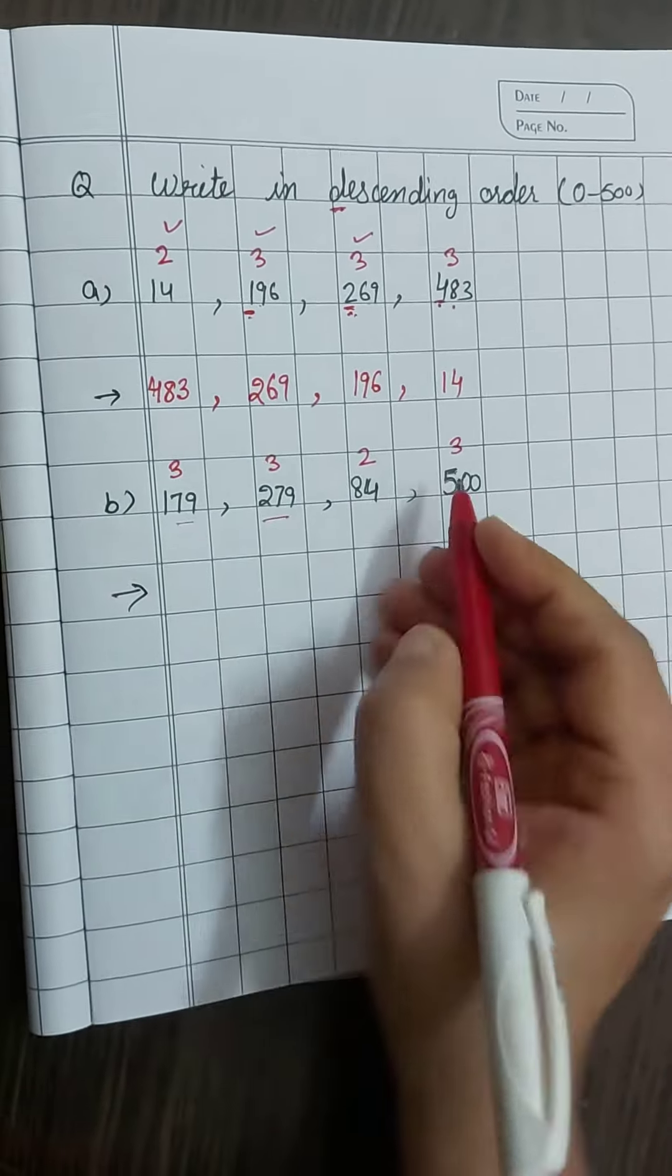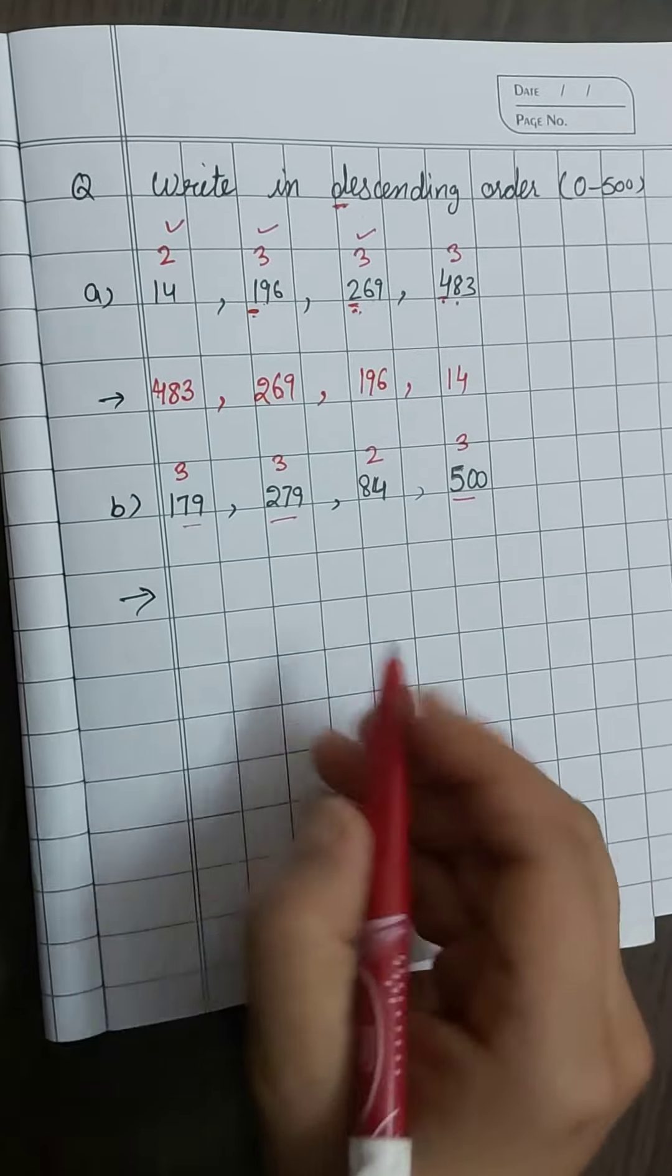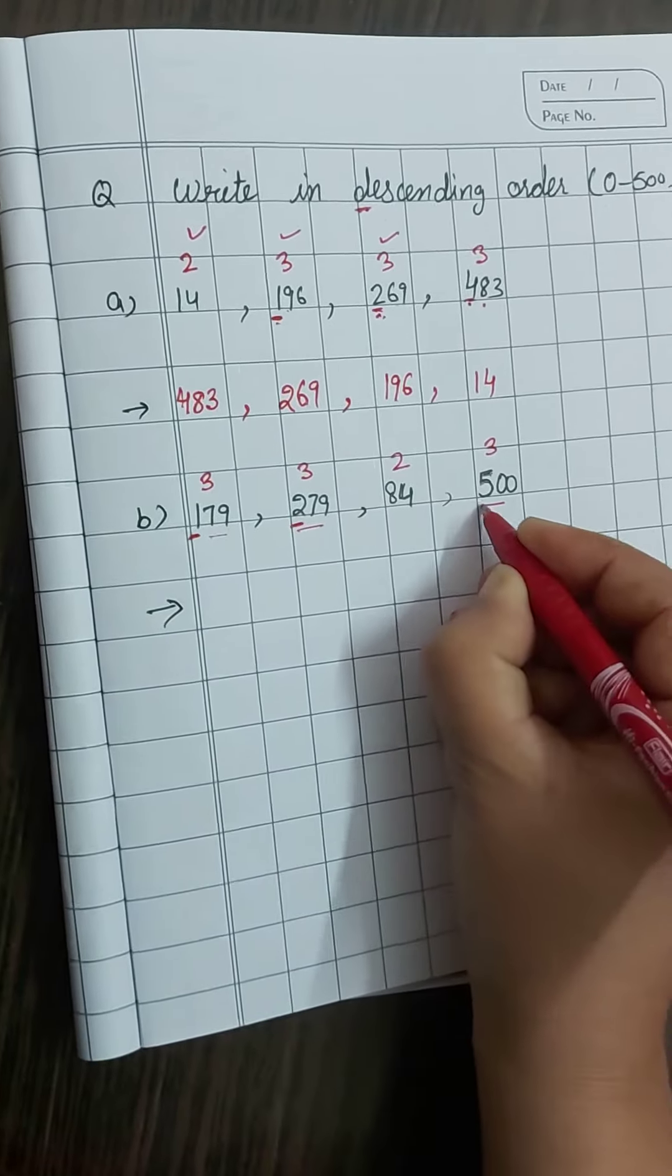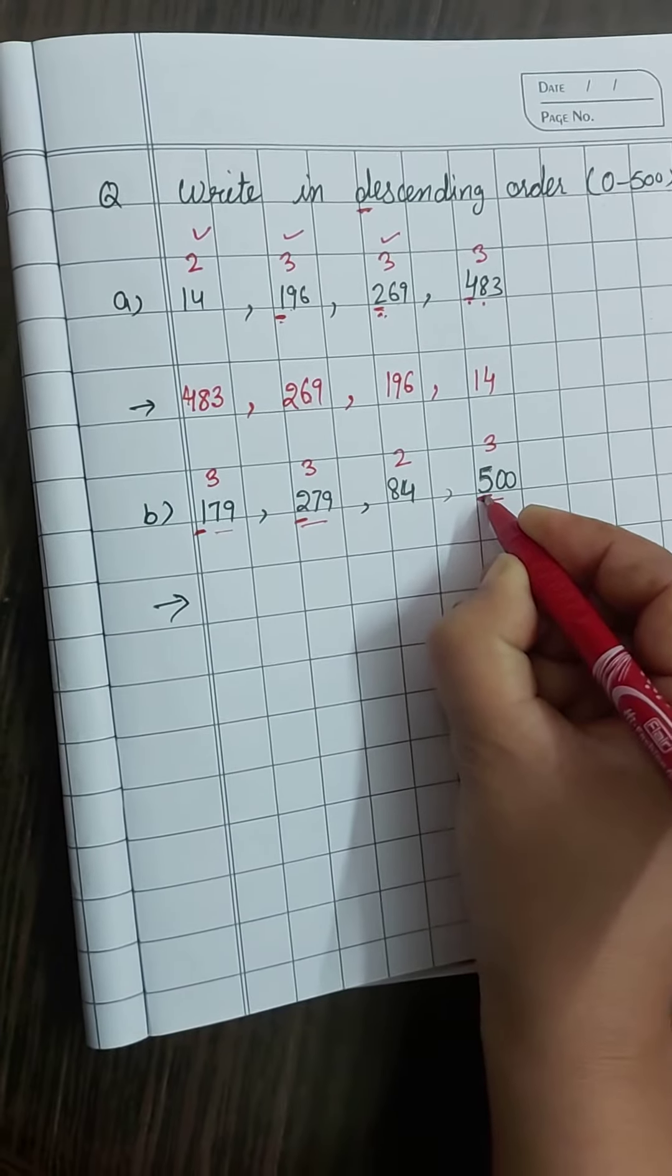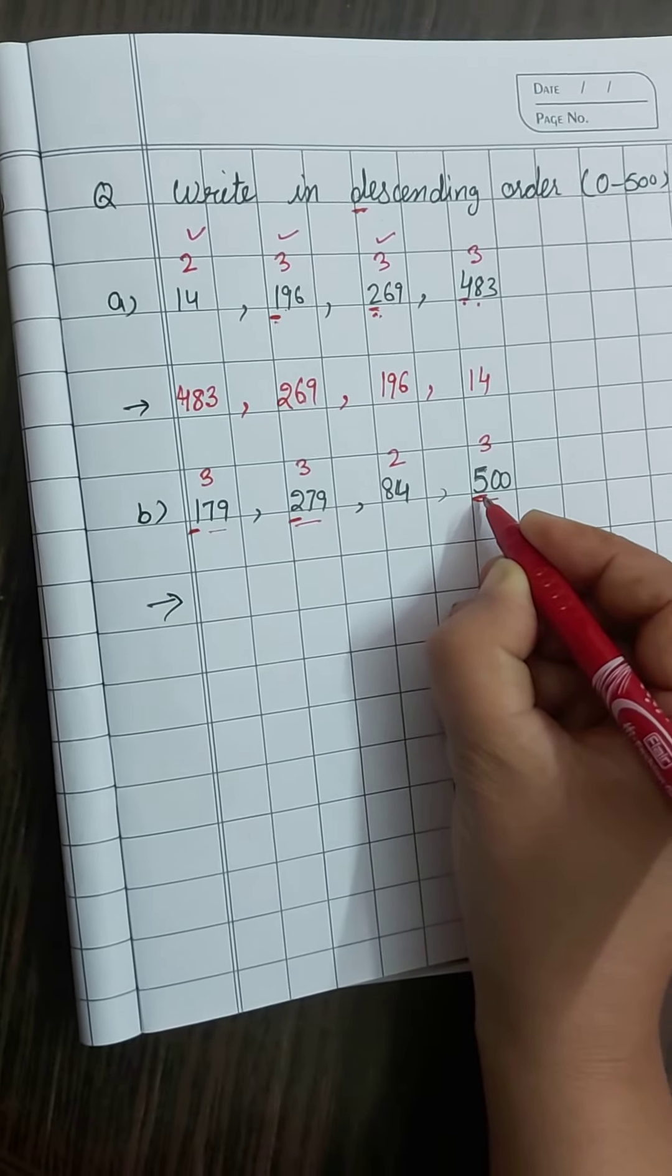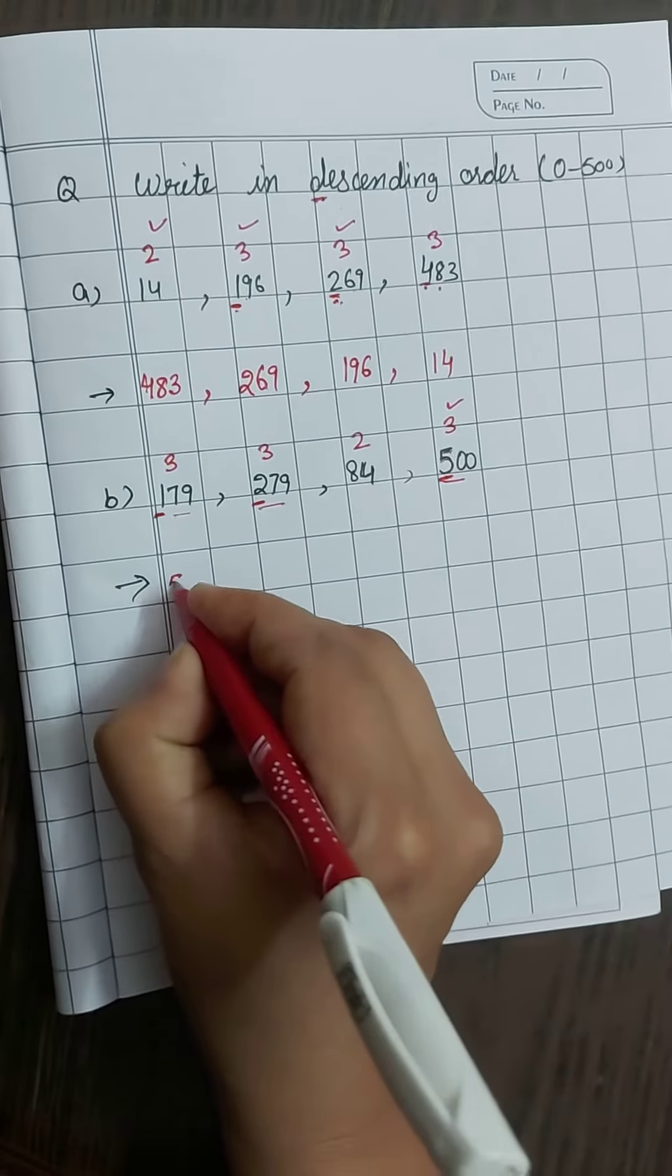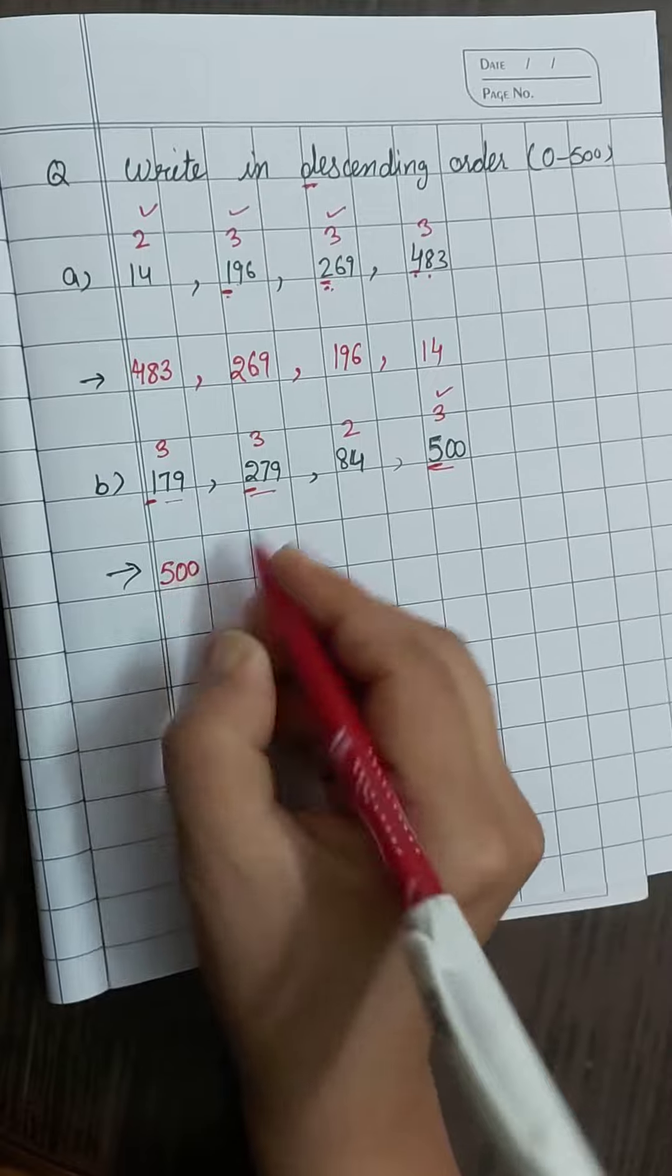Ye, ye aur ye teeno three digit number hai, to hum hundred place check karenge. Underline kar lena beta, aapko easy lagega. Five is the bigger number, so we will write down five hundred.